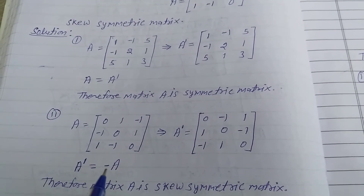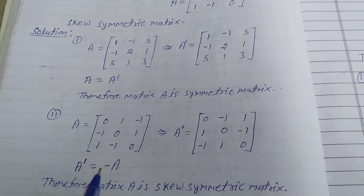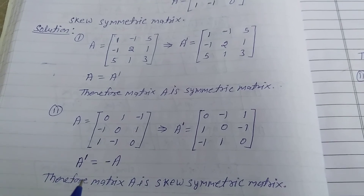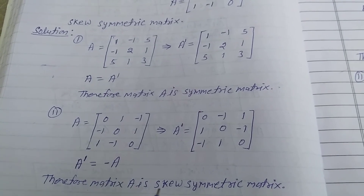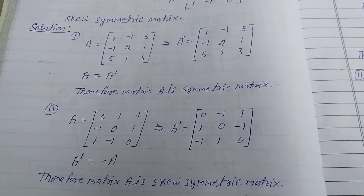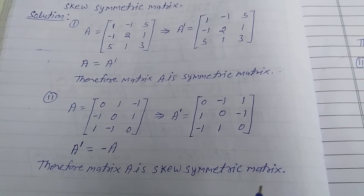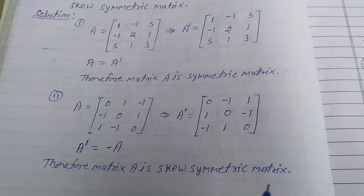This condition — transpose of A equals minus A — is the skew symmetric matrix condition. Therefore matrix A is a skew symmetric matrix. That is the solution of the question.